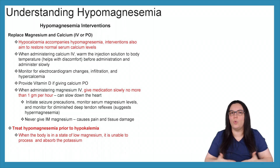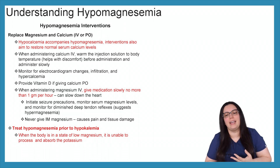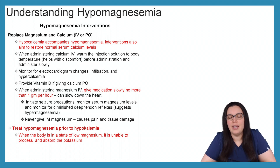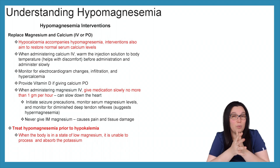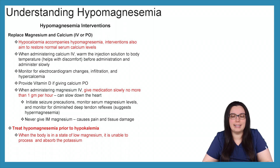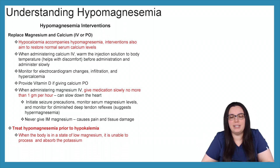As nurses, the goal is to replace magnesium and also calcium, since hypocalcemia accompanies hypomagnesemia. Both can be replaced IV or PO. When administering calcium IV, warm the injection fluid to body temperature to improve patient comfort, and administer it slowly — we never want to rapidly overcorrect any electrolyte. Monitor for ECG changes, infiltration, hypercalcemia, and hypermagnesemia. When giving calcium PO, provide vitamin D to aid absorption.